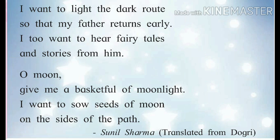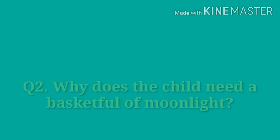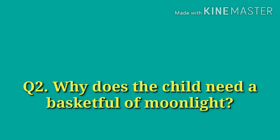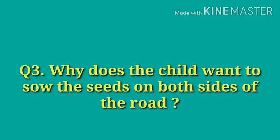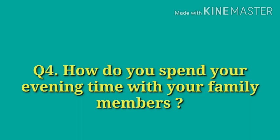Question number one: How many seeds of moonlight does the child need? Question number two: Why does the child need a basketful of moonlight? Question number three: Why does the child want to sow the seeds on both sides of the road? Question number four: How do you spend your evening time with your family members?